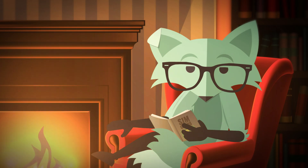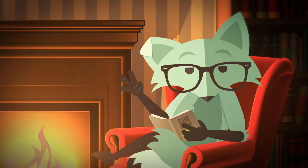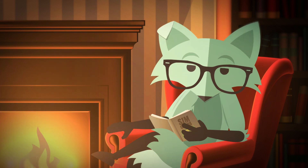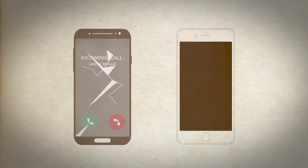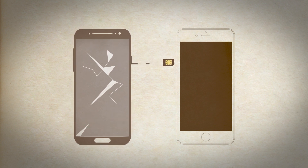Now, there are three different things you can mean by switching your SIM card, and we're going to discuss them all. First, switching a SIM card from one phone to another. Your phone number follows your SIM card from phone to phone, so as long as you insert it into a compatible device or unlocked phone, you should be able to use that phone with your number.